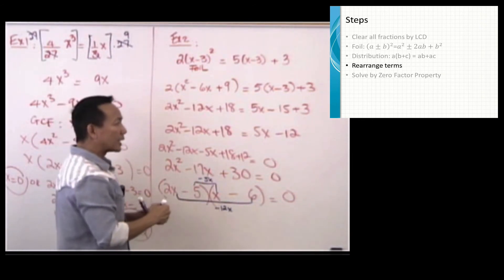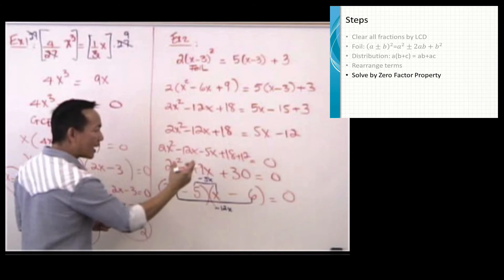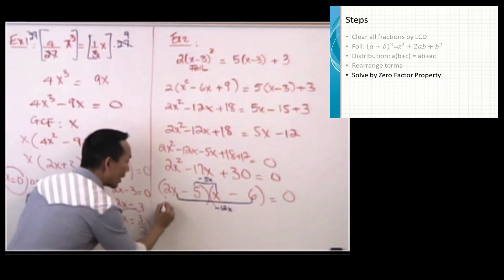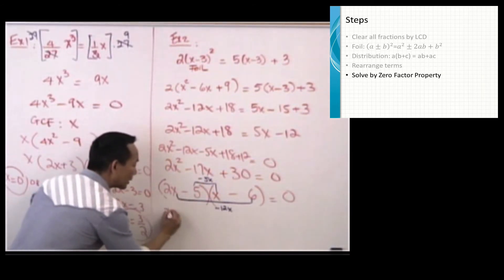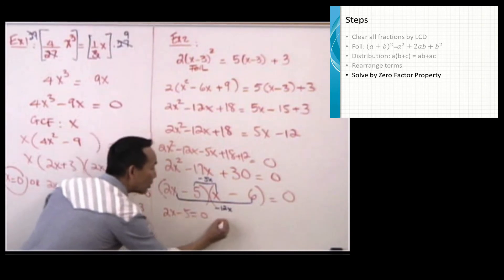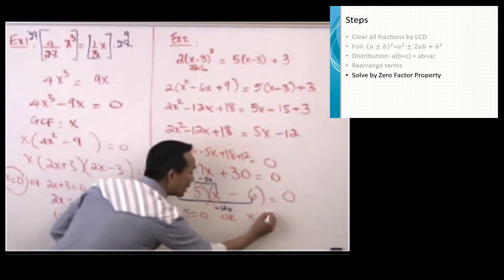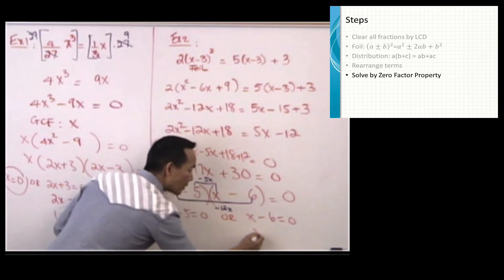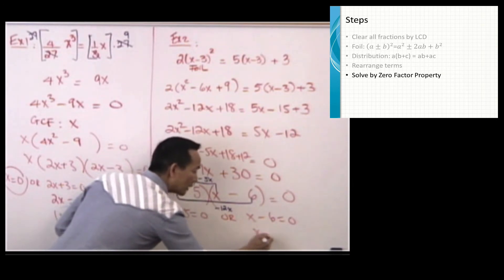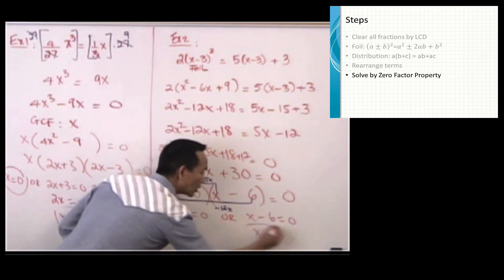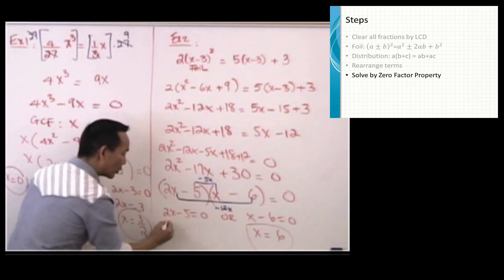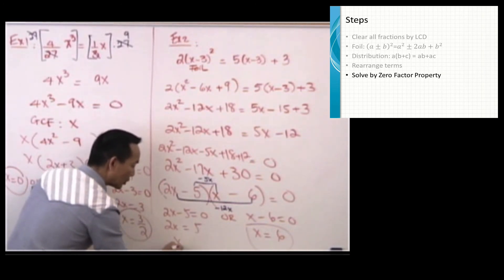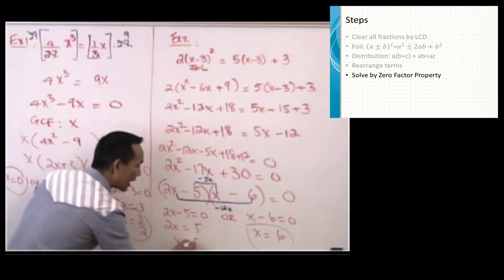Applying zero factor property: 2x minus 5 equals zero or x minus 6 equals zero. Solving: x minus 6 equals zero gives x equals 6. For 2x minus 5 equals zero, add 5 then divide by 2 — the solution is five halves.